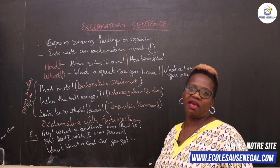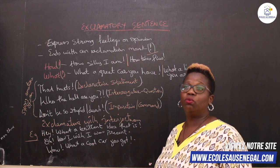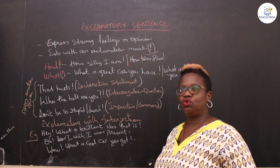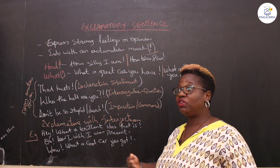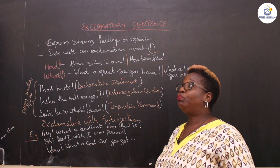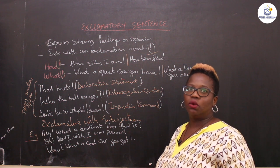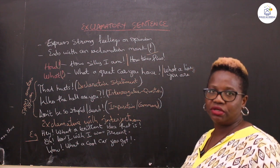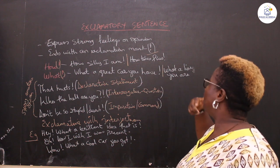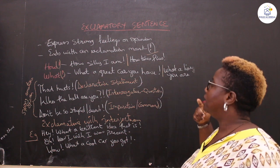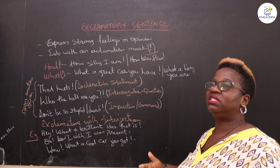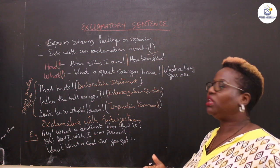Then there's the 'what' format. For example: 'What a great car you have!' 'What an awesome home!' 'What a great family you have!' In these cases, you're expressing positive emotion — the reader can sense that positive, uplifting atmosphere in the sentence.